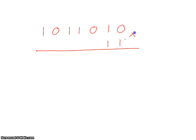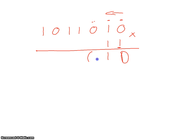We draw a line and start multiplying. Again we start from the right-hand side with the first one, multiplying across the top row from right to left. One times zero is zero, one times one is one, one times one is one, one times one is one, one times zero is zero, and one times one is one.